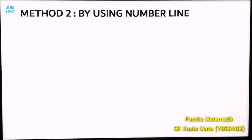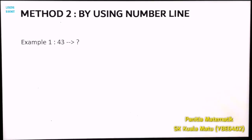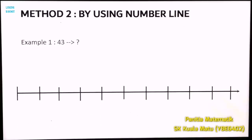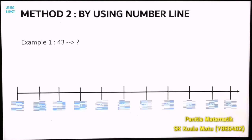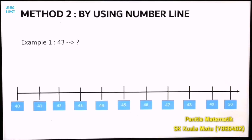Method two: using the number line. Let's round off number 43 to the nearest ten. Step one: draw the number line. Step two: fill in the numbers 40 up to 50, as we want to round off number 43 to the nearest ten. Step four: find number 43 and circle it.